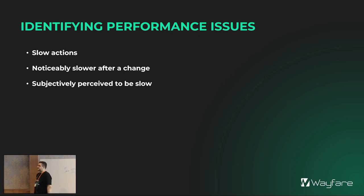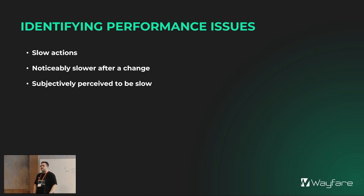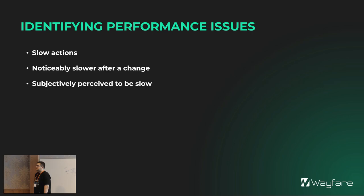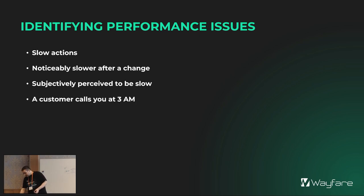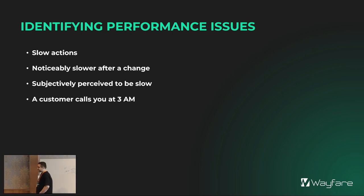Then there are things that are subjectively perceived to be slow — this isn't really a performance issue. It refers to parts of a process that take a long time, like running a report over 10 years of historical data or communicating with 10 different APIs. These are UX issues more than performance issues. And the final one: when a customer calls you at 3 a.m. — that's not the ideal way to find out about performance issues.